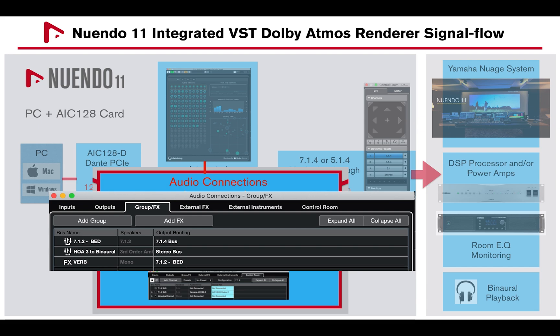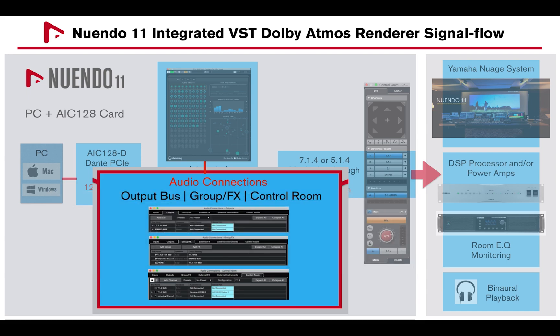In this example, I've also created a third-order ambisonic group channel that I called HOA3, to convert the 7.1.4 configuration into ambisonics and then to stereo binaural for headphone monitoring.